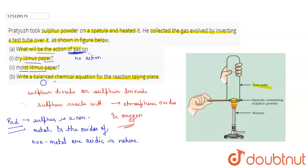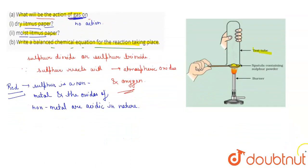Now balanced chemical equation for the reaction taking place. When sulfur reacts with O2 it will give SO2, that is sulfur dioxide. And when this sulfur dioxide reacts with water it gives H2SO3, that is sulfurous acid. So this is the solution, thank you.